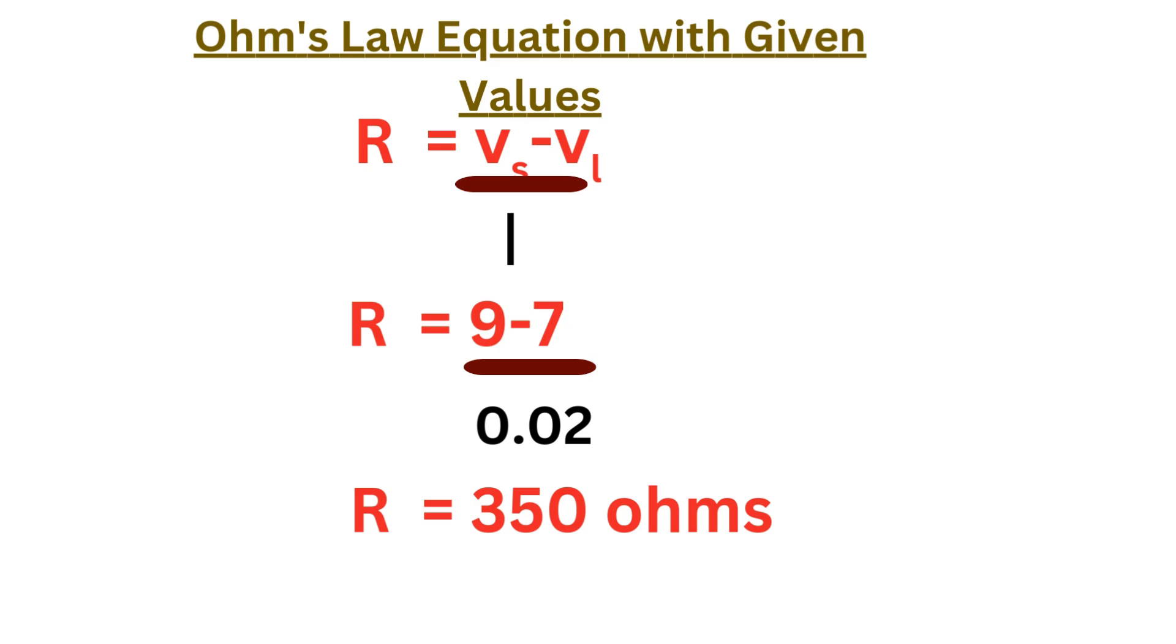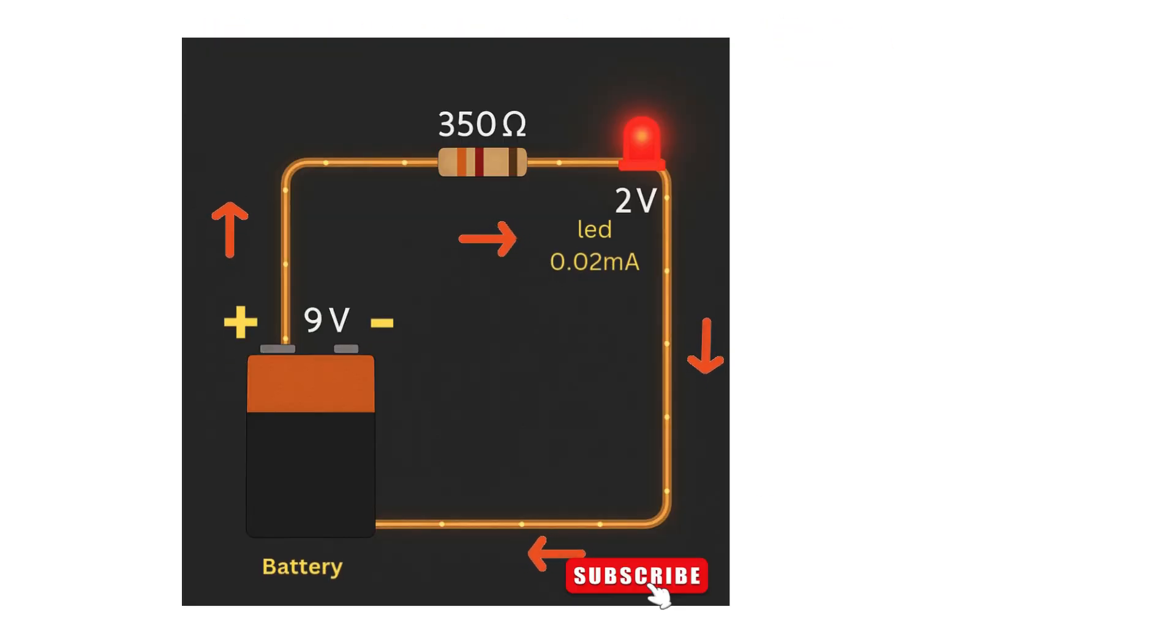By adding a 350 ohm resistor in series we protect the LED and make sure it runs safely. Now the LED works perfectly - no damage, no burn out.